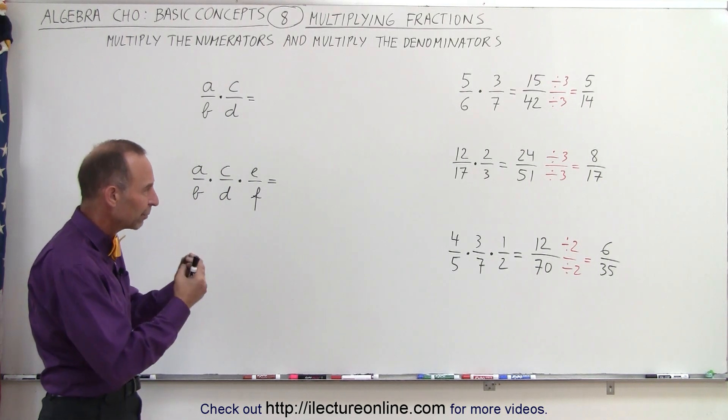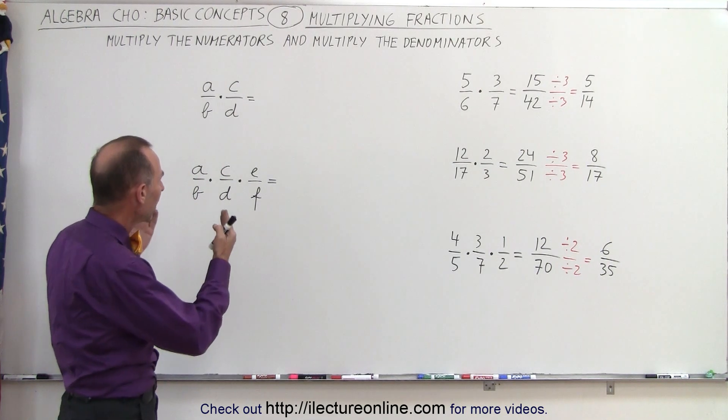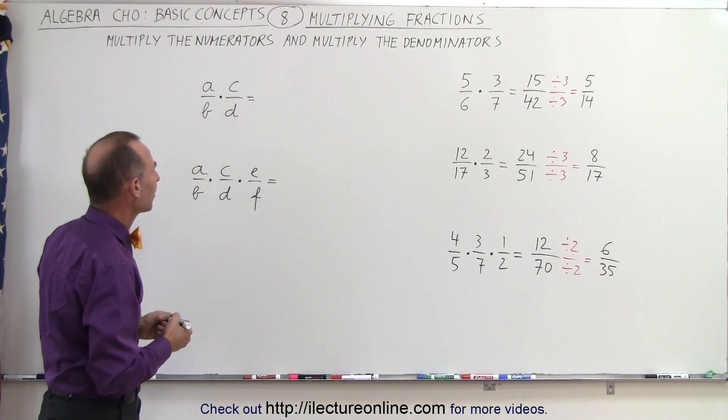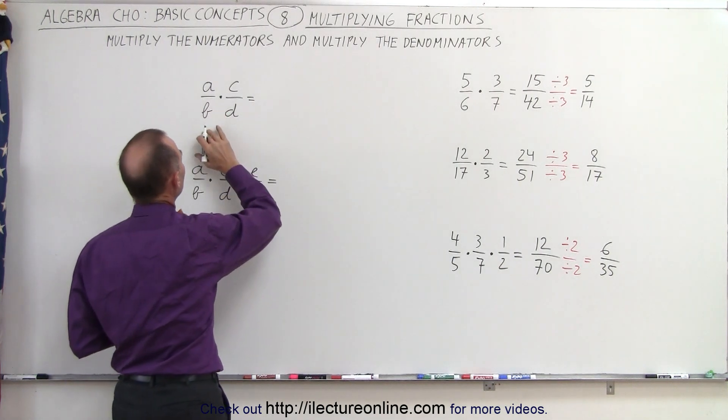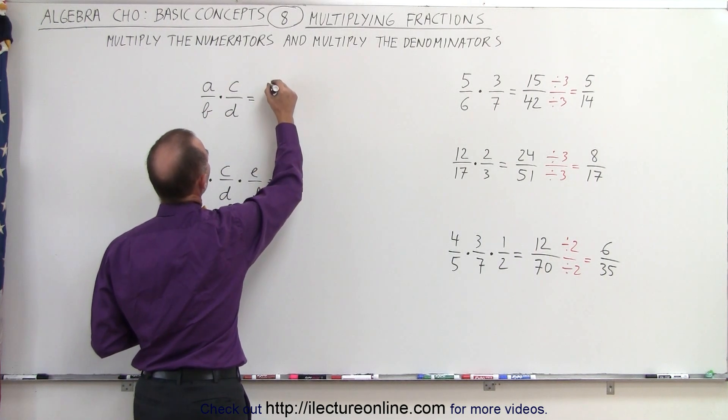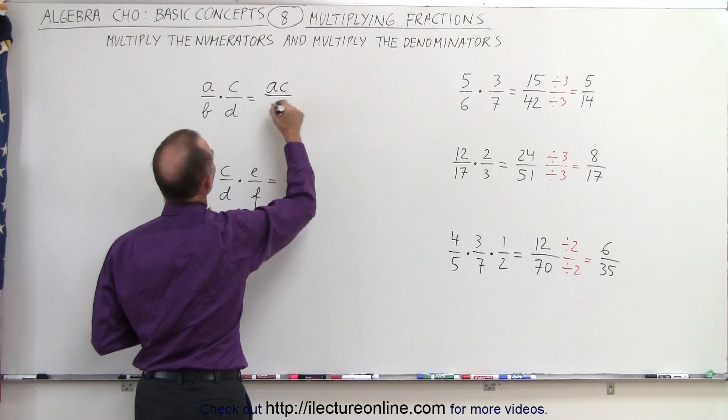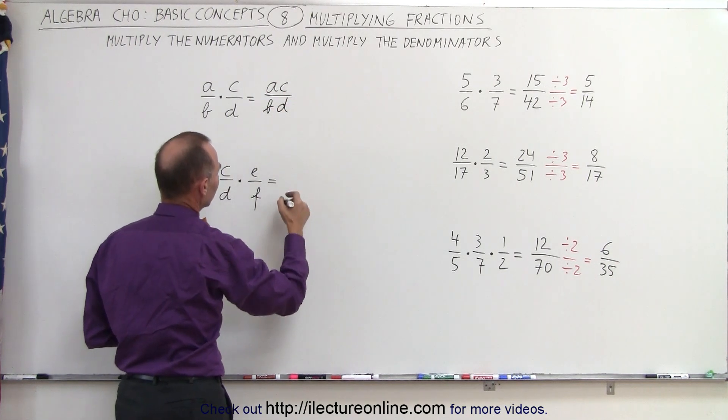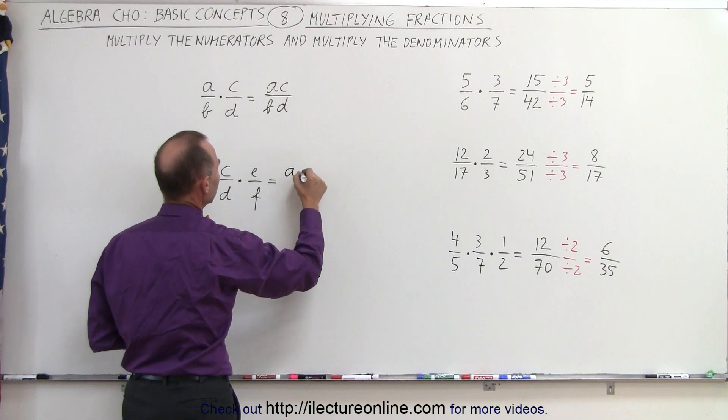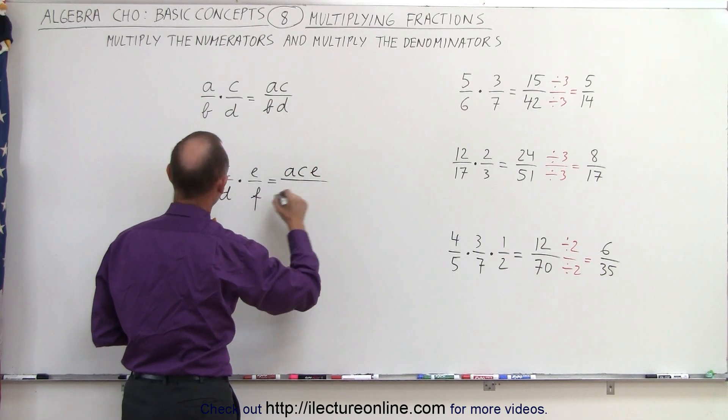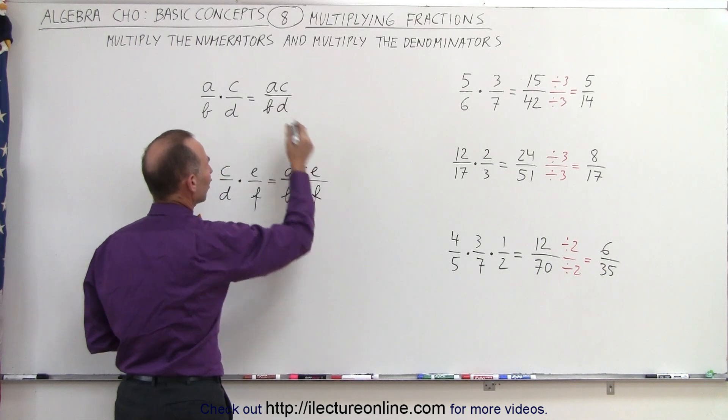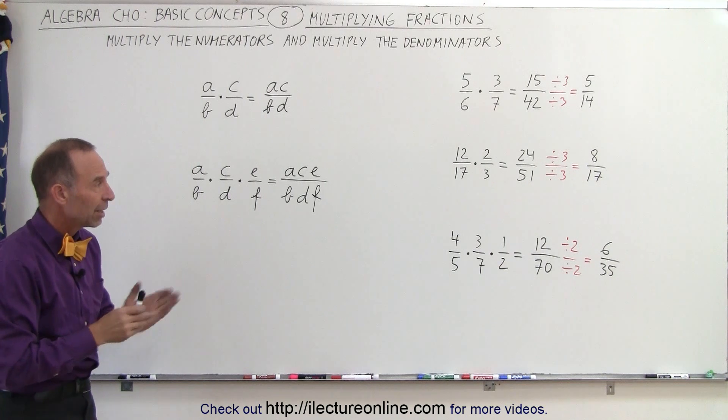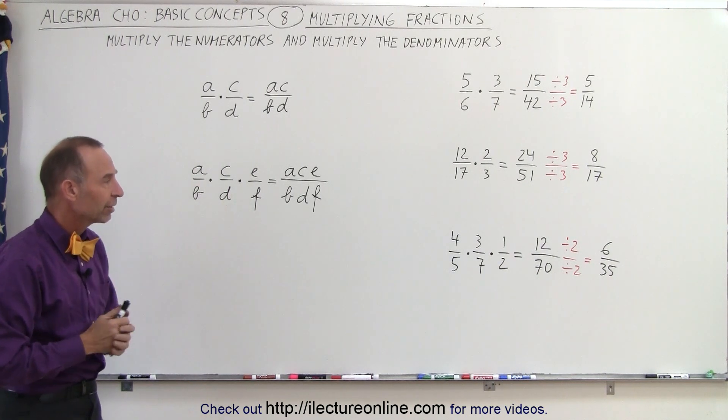The general rule when we think in terms of algebra: A over B times C over D is simply the product of A times C divided by B times D. If there are multiple fractions, we simply multiply all the numerators together—that would be A times C times E—divided by B times D times F. That's the general rule: multiply the numerators together and multiply the denominators together to get the final format.